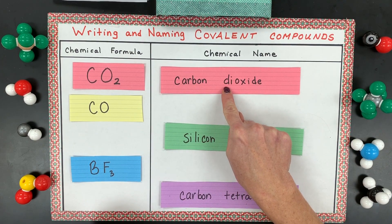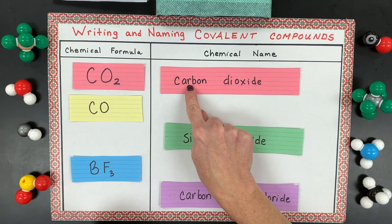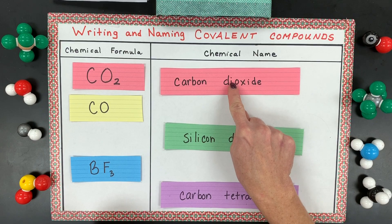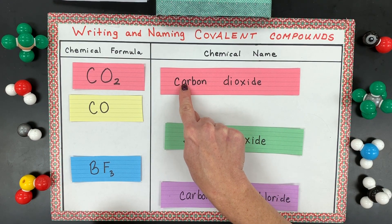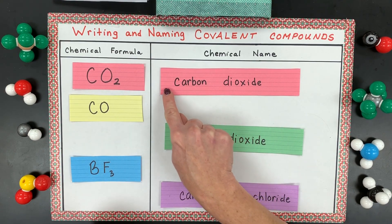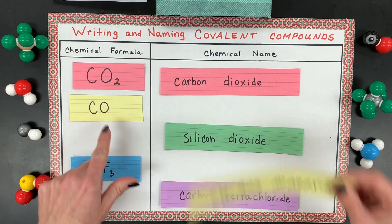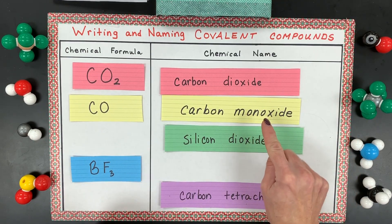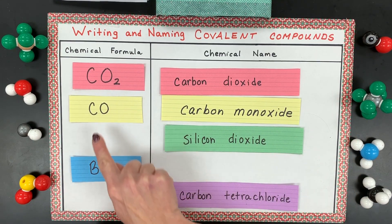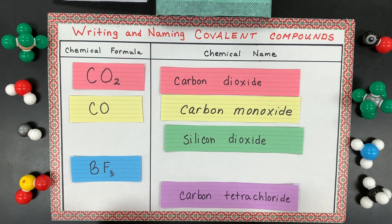Prefixes are used to denote the number of atoms in the formula. The first element is never listed as 'mono.' However, you can use mono for the second element. CO is called carbon monoxide — that's where you do need mono, meaning one oxygen. You do not say 'monocarbon' — that is not correct.